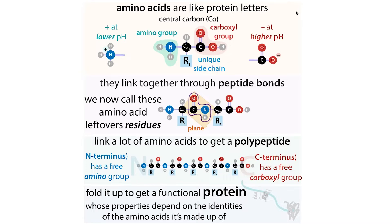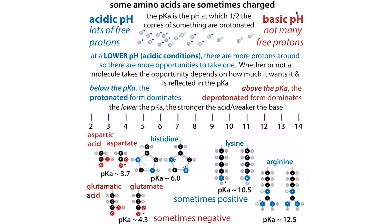I'm talking about things like acidity — how likely something is to give up a proton. So is that aspartic acid going to be in its negatively charged aspartate state? Or is that lysine going to be positively charged? These charges are going to depend on whether or not these side chains have given or taken protons. Their willingness to give and take protons — their pKa, their acidity — is going to depend on the context they're surrounded in. They're going to have a different pKa in the presence of other amino acids around them than in just the free-floating form.